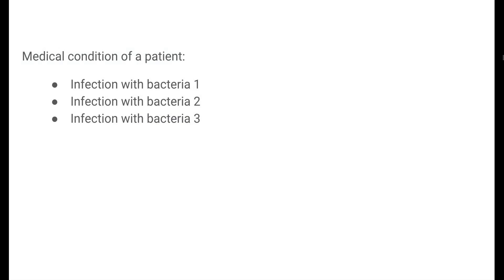Why do we need special models for categorical variables? Consider an illustrative situation. Suppose we want to model the medical condition of a patient based on the symptoms they're presenting with, and suppose there are three possible outcomes: infection with bacteria type 1, 2, or 3. If we wanted to use linear regression, we would have to turn medical condition from a categorical variable to a quantitative variable. We could do this by calling the response Y and assigning the numbers 1 to 3 for the three types of bacteria.